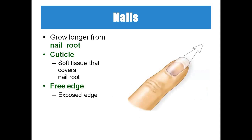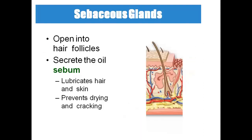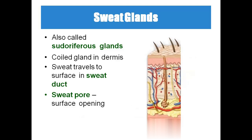Sebaceous glands are oil-secreting glands, usually associated with the hair follicle, and they prevent the drying and cracking of the skin. Sweat glands, also called sudoriferous glands, are coiled glands present in the dermis. The parts of the sweat glands are: sweat gland, sweat duct, and sweat pore. The sweat pore opens to the surface.